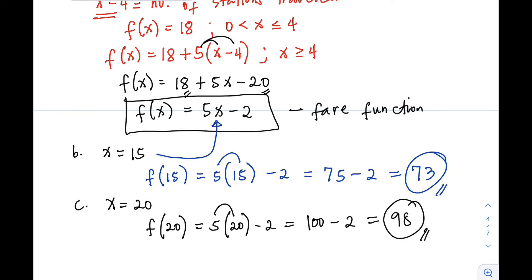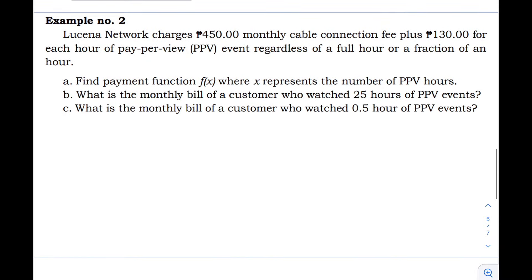Let's have another example. Number two: Lucena Network charges 450 pesos monthly cable connection fee plus 130 pesos for each hour of pay-per-view event, regardless of whether it is a full hour or a fraction of an hour. Letter A: find the payment function f(x) where x represents the number of pay-per-view hours. Letter B: what is the monthly bill of a customer who watched 25 hours of pay-per-view events? Letter C: what is the monthly bill for a customer who watched 0.5 hour?